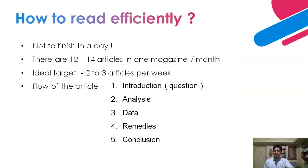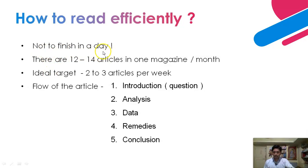Now, moving ahead, let's talk about how to read Yojana efficiently. Because it is a very large document, and a serious aspirant has many tasks to do — GS has to be read, CSAT has to be done, the optional has to be given attention. While managing all these things, it may happen that Yojana magazine gets left behind, or too much time gets allocated to Yojana. To avoid such situations, you have to maintain the efficiency. So, the first thing to keep in mind is: do not finish it in a single day. Not to finish in a day, because there are 12 to 14 articles in one magazine every month, so you don't have to finish all articles in one day.